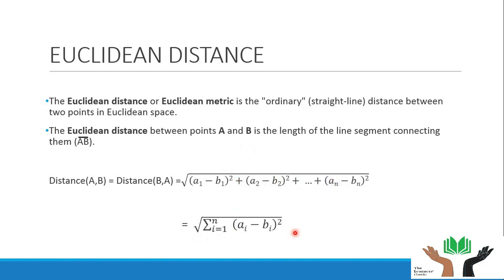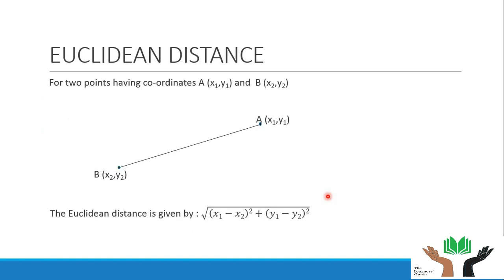This is a generalized formula. Now let us take an example of the Euclidean distance where we have two points a and b. The coordinates of point a are x1, y1 while the coordinates of point b are x2, y2. Then the Euclidean distance between these two points will be the square root of (x1 minus x2) squared plus (y1 minus y2) squared. It is nothing but a simple distance formula.